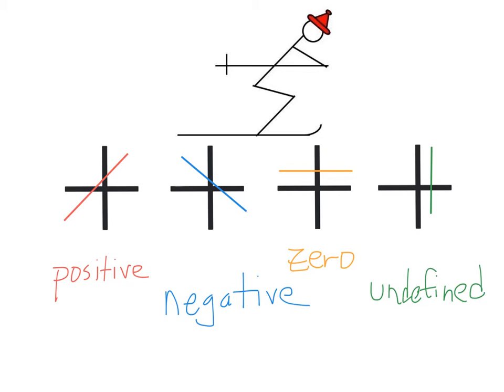Let's look at another way that we can remember the differences between a positive, negative, zero, and undefined slope. And since we're talking about slope, we're going to use a snow skier analogy.